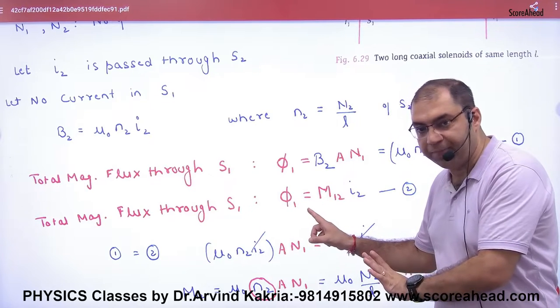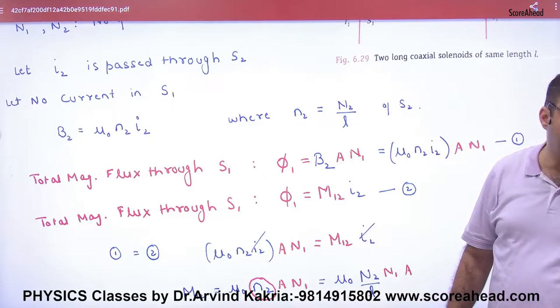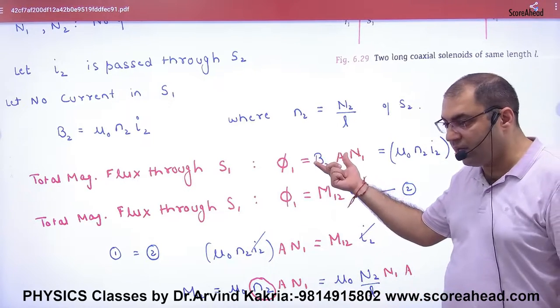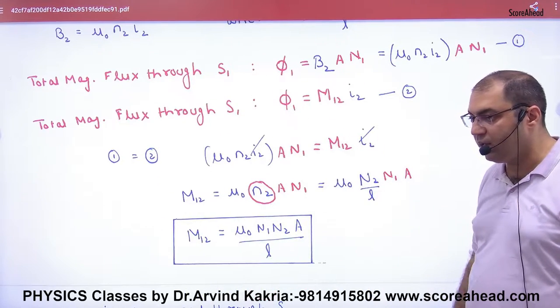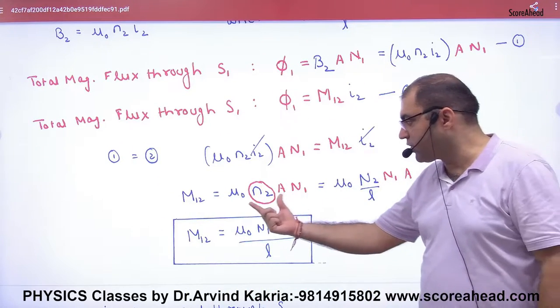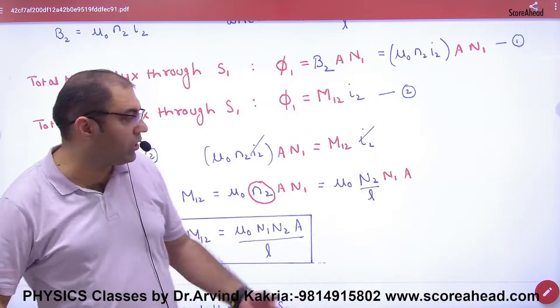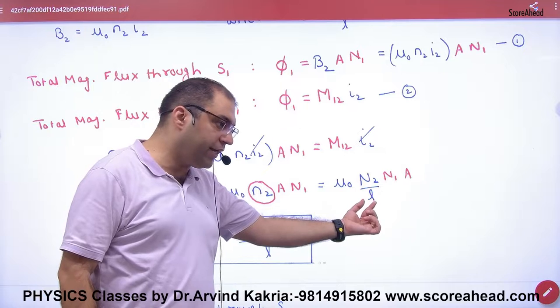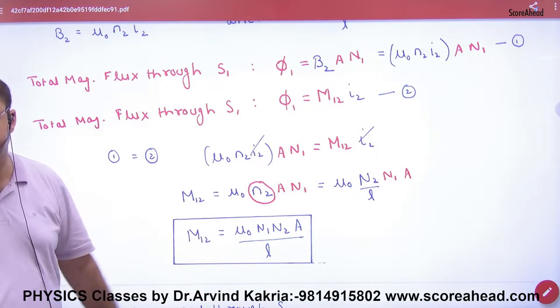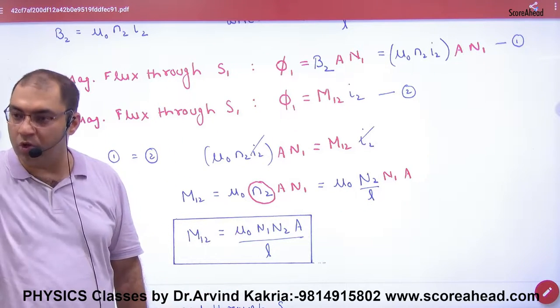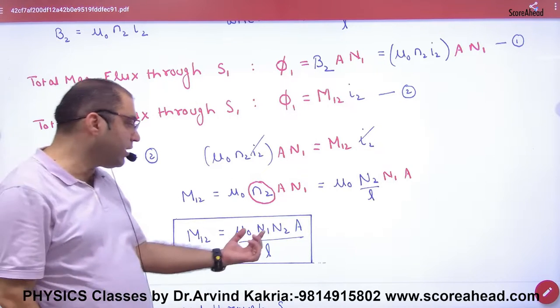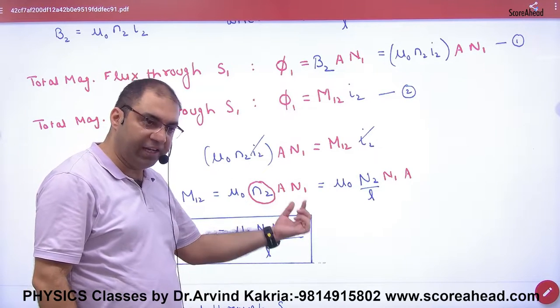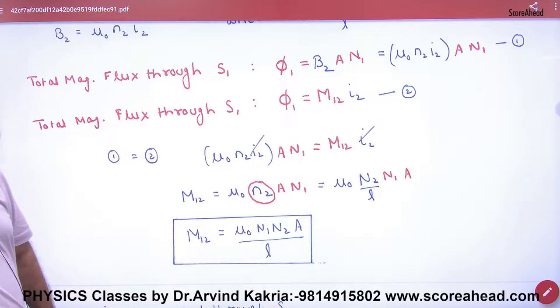We are calculating flux in two ways. One time the old method, one time this method. Equate both. i2 cancels. What remains is the formula for M mutual inductance. N2 means number of turns per unit length. Mark this formula, it will be useful in numericals. Mutual inductance of both coils depends on both coils' number of turns, area, and length.